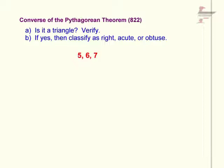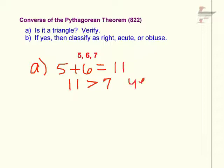First of all, we're going to solve question A, is it a triangle? So to solve that, we are just going to verify that it's a triangle by adding the two smaller sides, 5 plus 6, and if that is greater than the third side, we have a triangle, and 11 is greater than 7. So yes, we have a triangle, and now we can try to classify it.